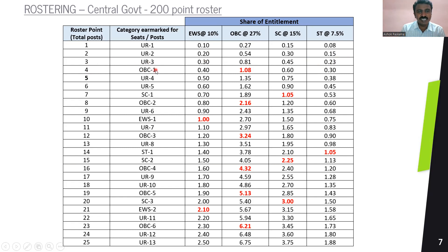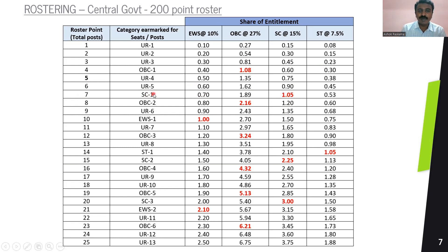When we come to the fourth seat, UR is the default, but OBC here has an entitlement of one seat. Because there are four seats, 27% of four is 1.08 seats — so I have to provide OBC one seat as per their reservation percentage. I mark this roster point against OBC instead of UR. OBC's first entitlement is now fulfilled. Moving on to the fifth and sixth seats — no new entitlement. At the seventh seat, SC is at 15% and 15% of seven seats is 1.05, which means SC is entitled for one seat. Therefore, the seventh roster point is earmarked against SC. At the eighth seat, OBC is entitled for its second seat — since only one seat has been provided so far, we move on to provide the second OBC seat at roster point eight.